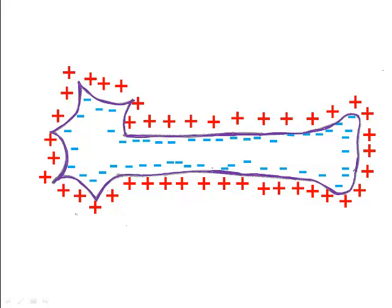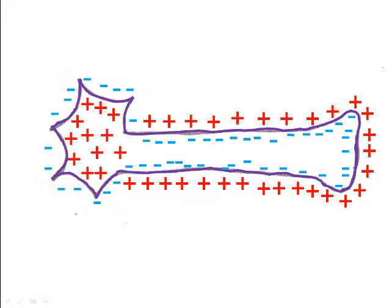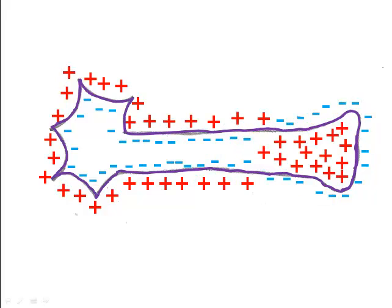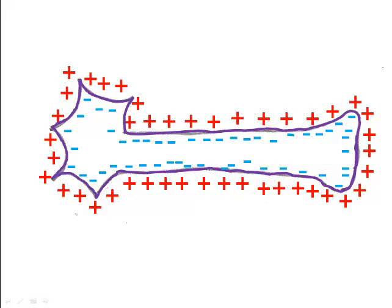Here's the neuron at rest. Depolarization of the first part. Repolarization of the first part and depolarization of the next part. Repolarization of the next part and then depolarization of the subsequent part. And back to resting potential. That would be one wave of depolarization. Let's take a look at it again quickly.